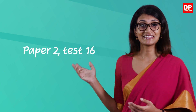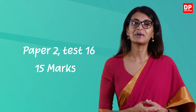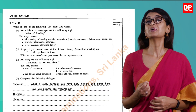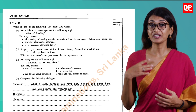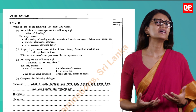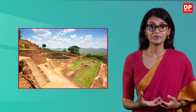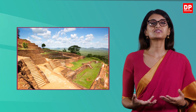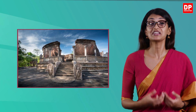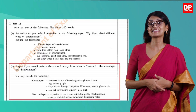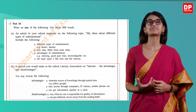Now that we have a basic idea about speech writing, let's look at some possible questions from the past papers of your O-Level English. You will usually get to write a speech in Paper 2, Test 16, which carries 15 marks. In the 2015 paper, you are asked to write a speech titled 'If I Could Go Back in Time.' This requires you to stretch your imagination and write a personal speech — maybe using this topic to display your knowledge on the history of Sri Lanka, making it informative.